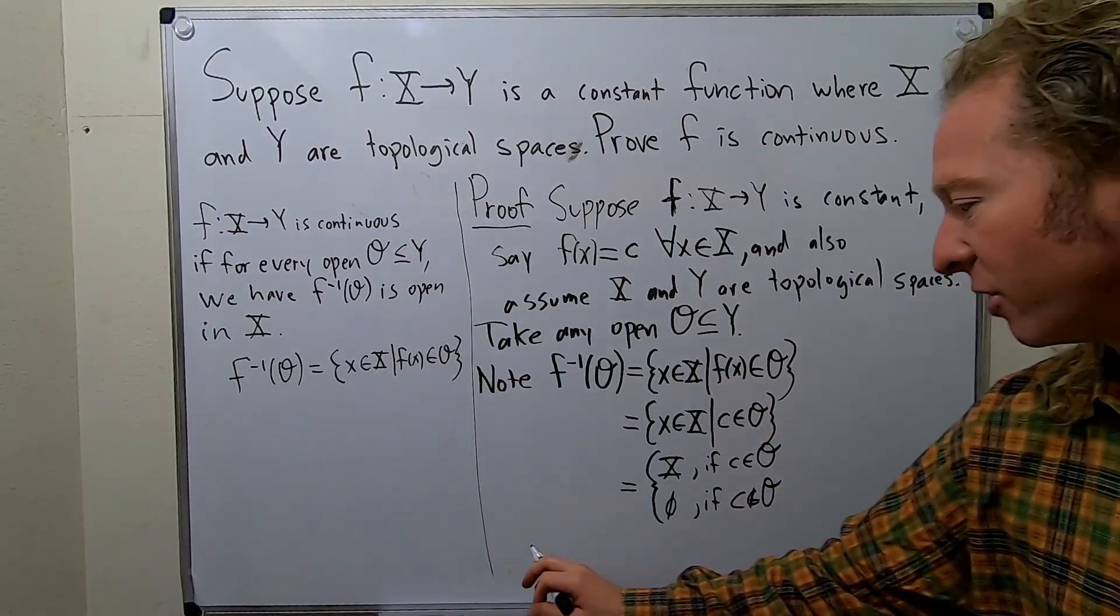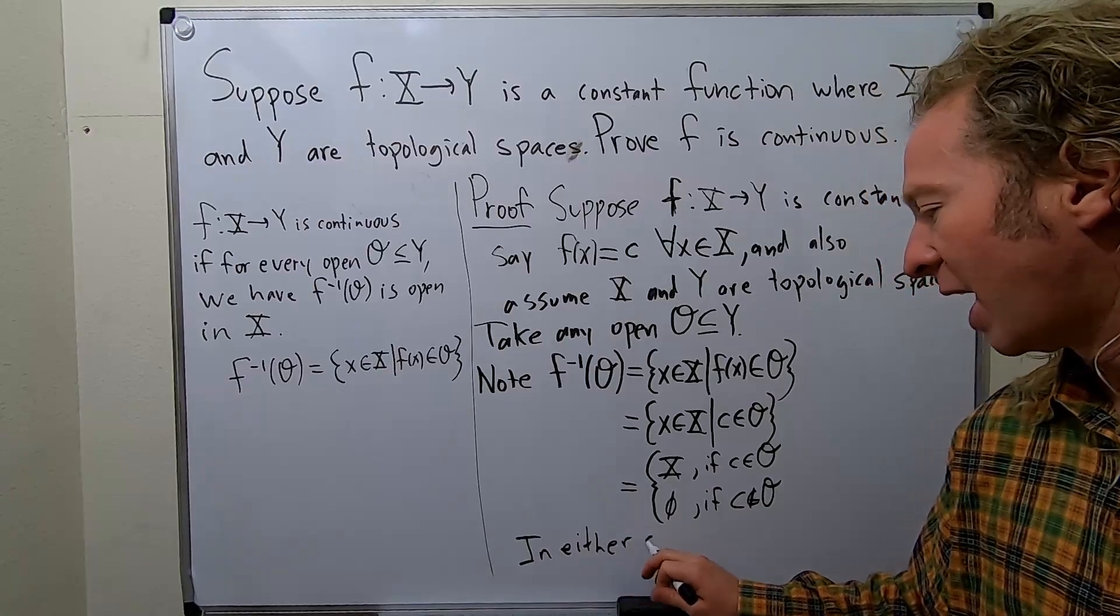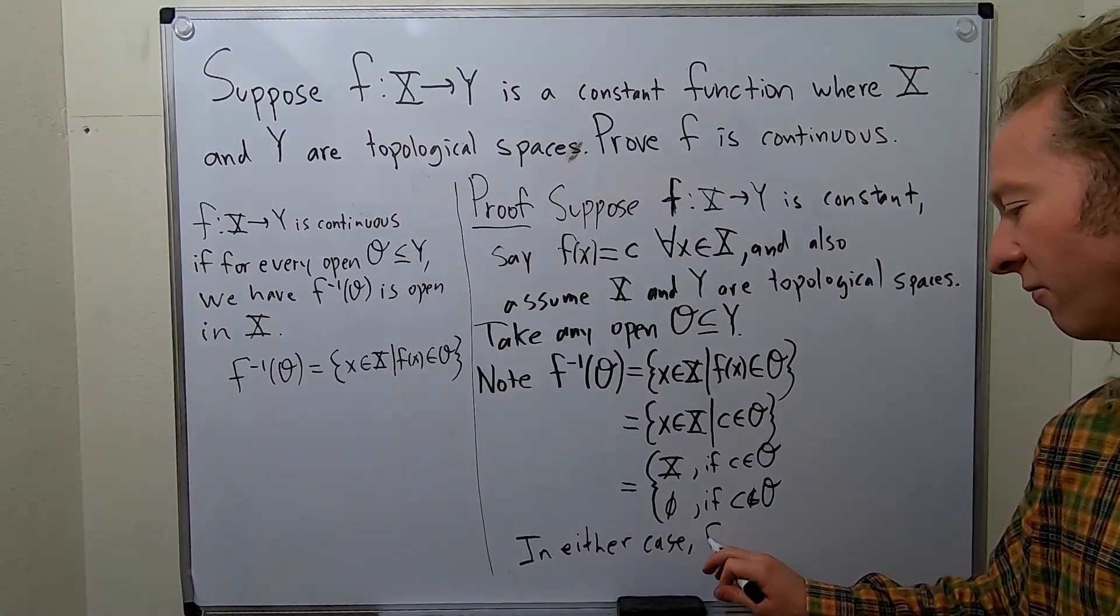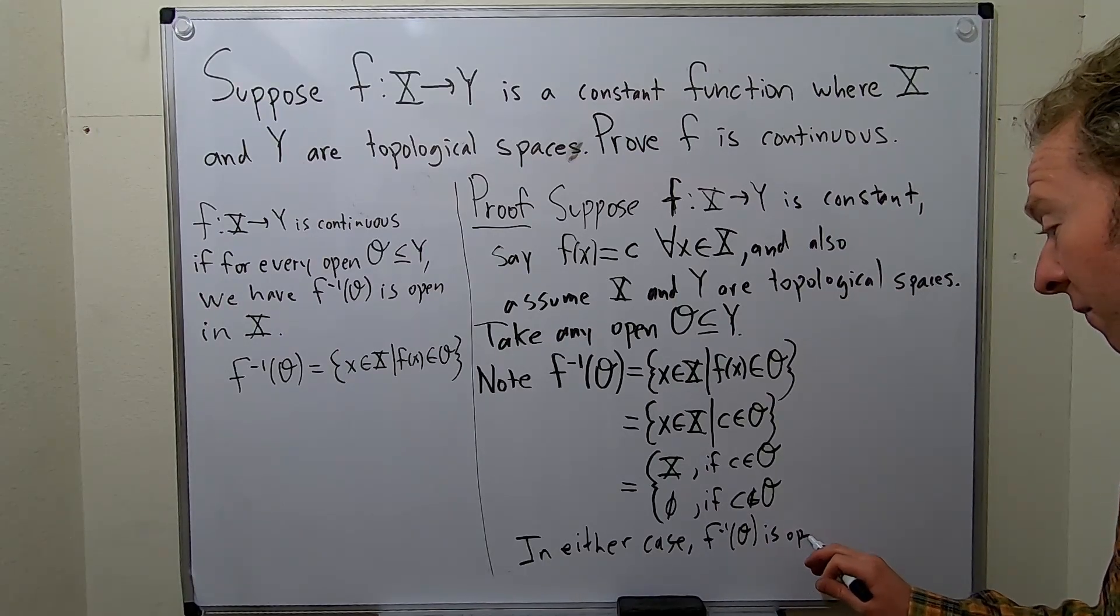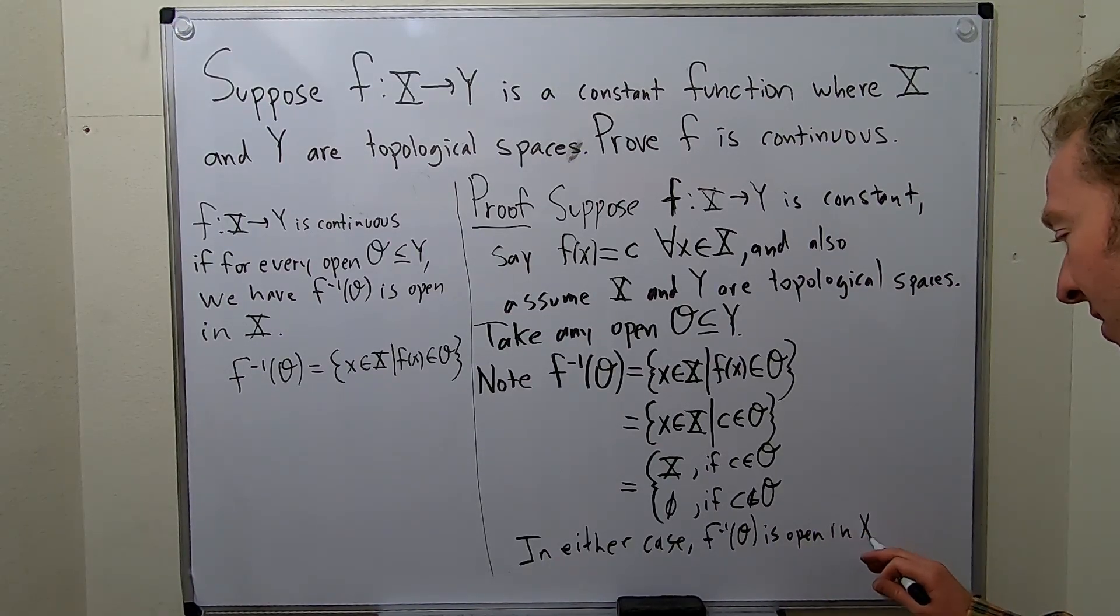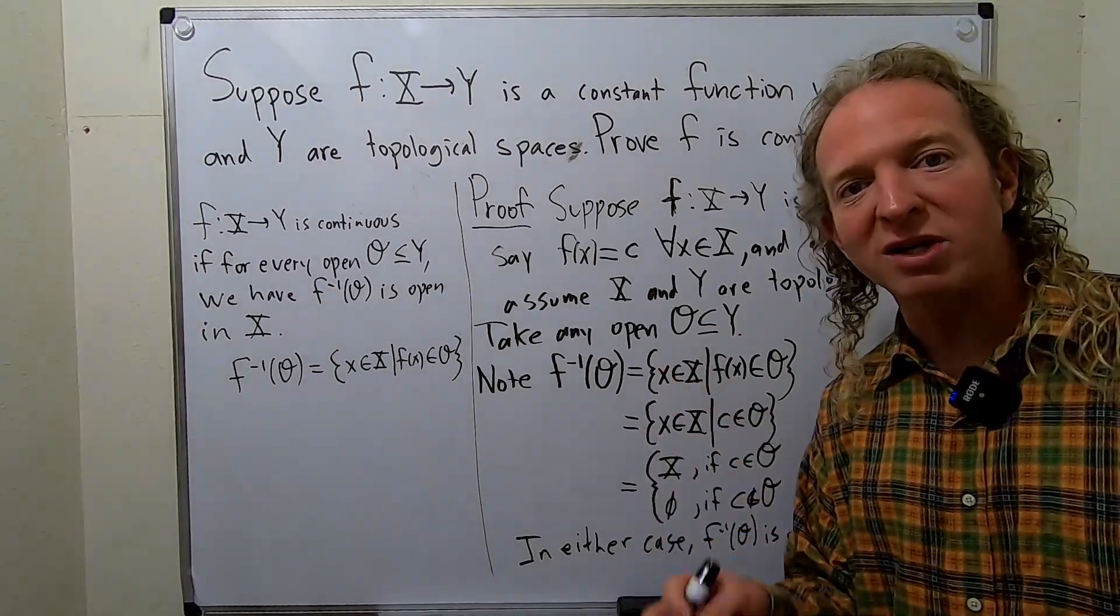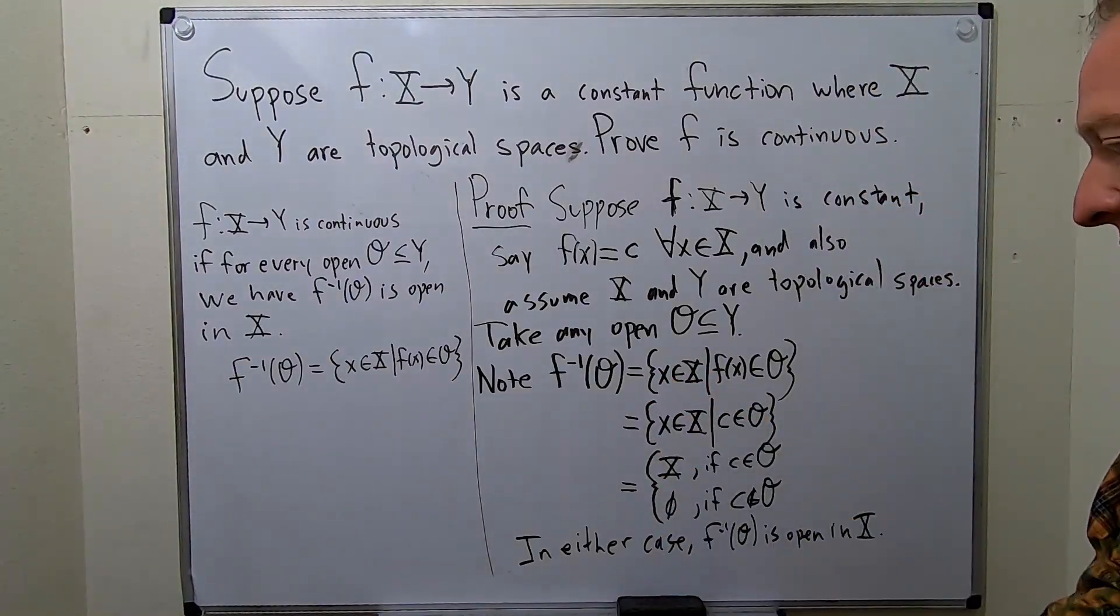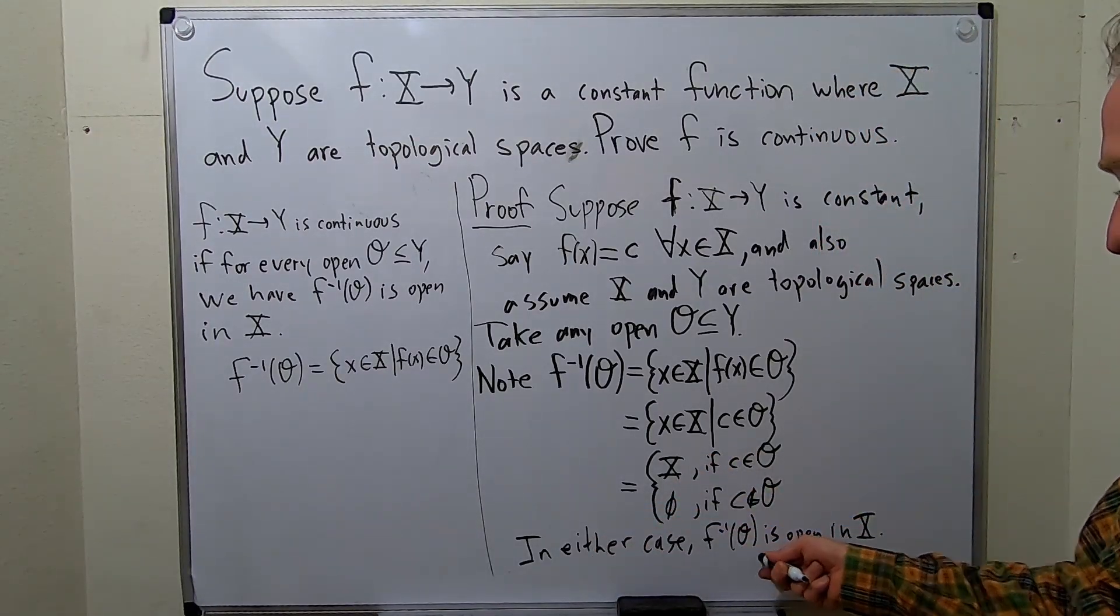So in either case, the inverse image of O under F is open in X, right? The empty set and the entire space are always open in that space. They're always members of the topology. So in either case, F inverse of O is open in X.